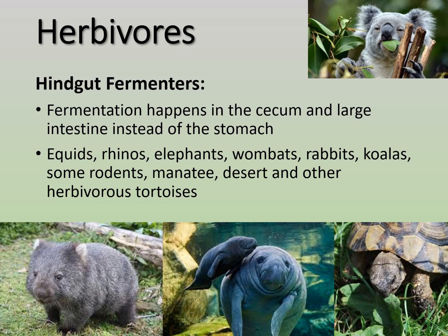Examples of hindgut fermenters include equids — horses, zebras, donkeys — as well as rhinos, elephants, wombats, rabbits (which are essentially miniature horses in terms of GI system), koalas, some rodents, manatees, and herbivorous tortoises like desert tortoises.